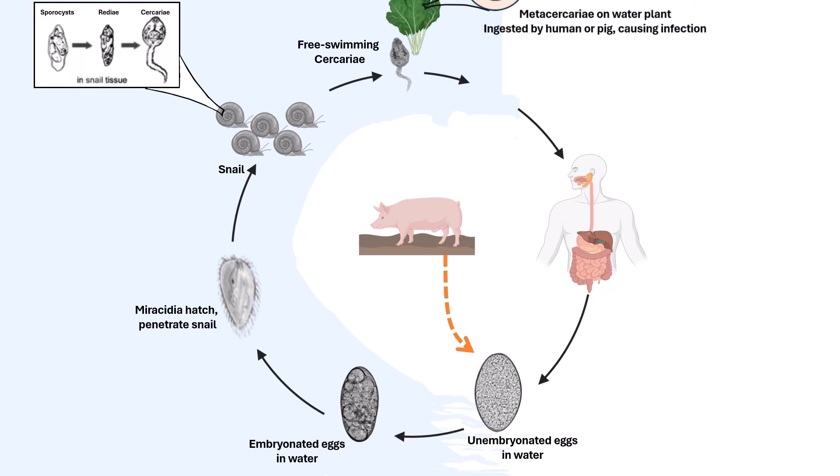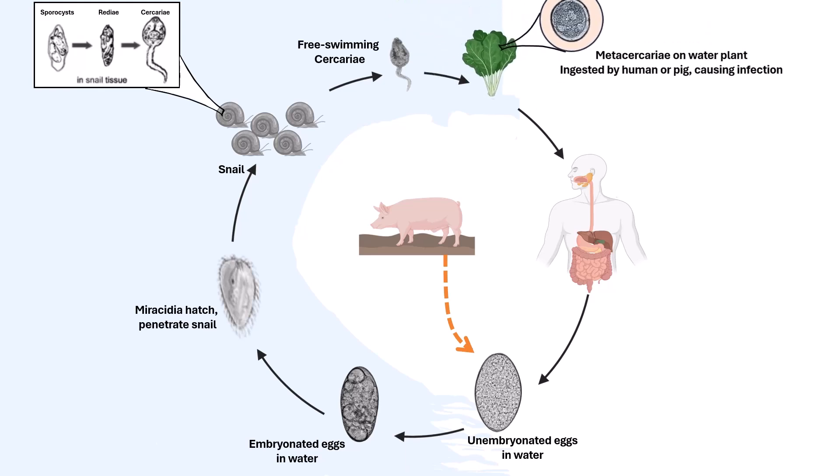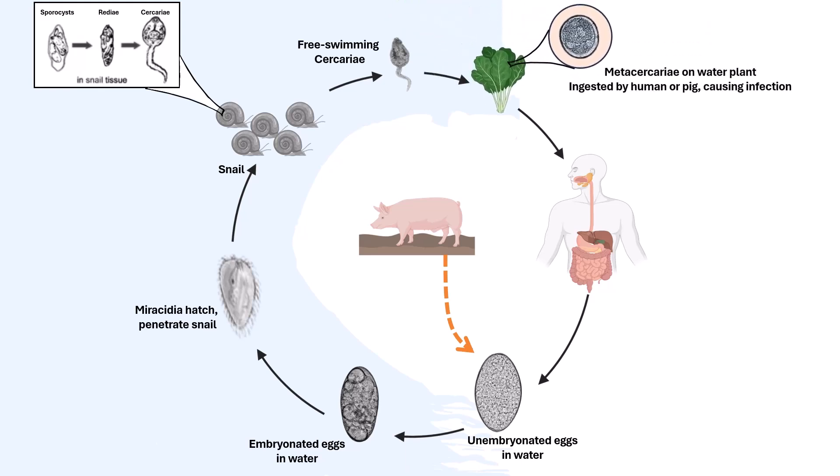The cercariae are released from the snail and encyst as metacercariae on aquatic plants. Watercress is one of the most common vegetables that can transmit Fasciolopsis buski, as metacercariae form on the leaves of these vegetables.